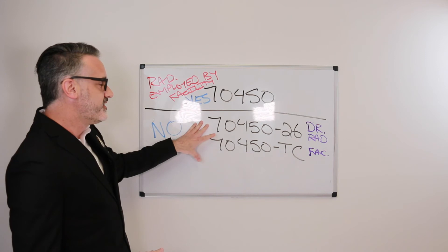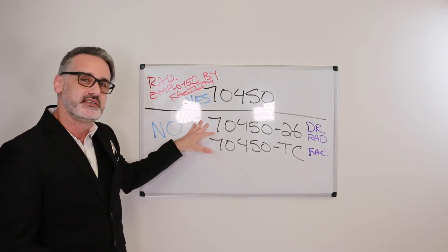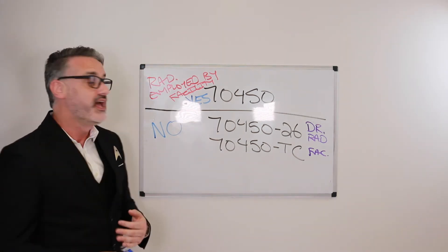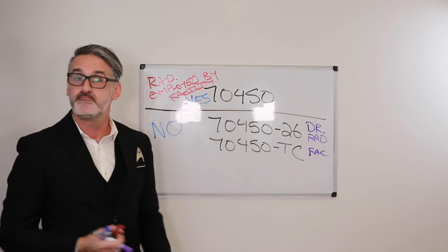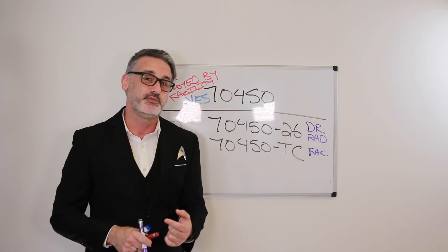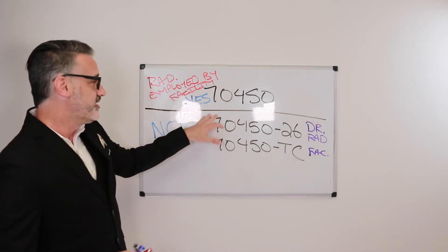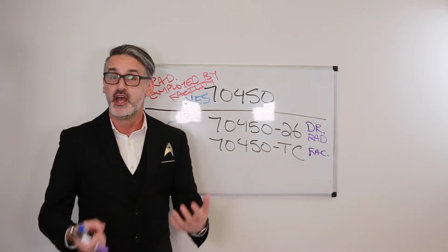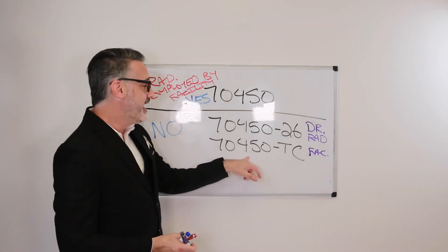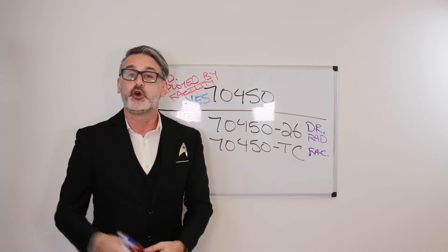So, all we have to check is the facility status of the employment relationship with the radiologist. Again, if the radiologist is employed by the facility, we just do the CPT code and that's it. If the radiologist is not employed by the facility, then if we're coding for the radiologist, we do the appropriate radiology code, modifier 26, and modifier TC if we're coding the facility.